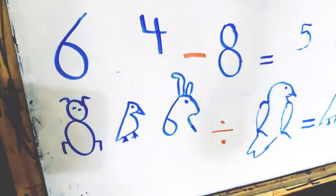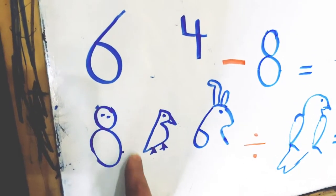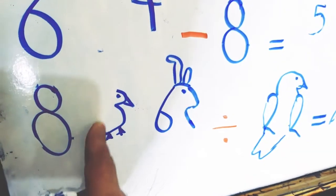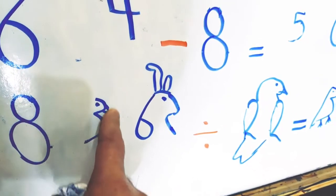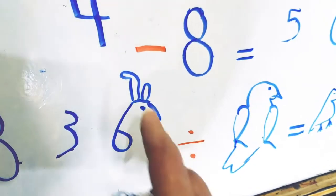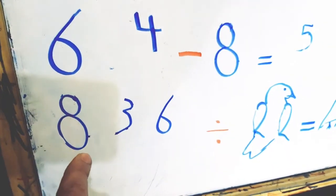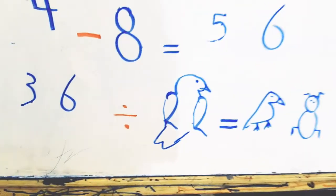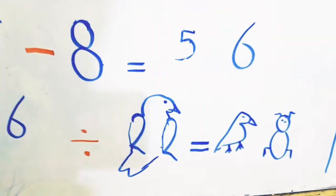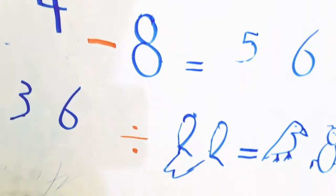We have a barrel — we will clear some parts of this barrel in order to reach the correct digit. Now we have it. We have a bird — we will delete some parts of this bird to reach the correct digit. We have three. This rabbit — we will clear some parts of this rabbit. Now we have six. So we have 836. Divided by a bird — in order to turn this bird into a digit, we must delete or clear out some parts of it.